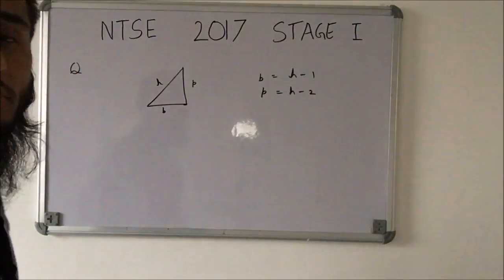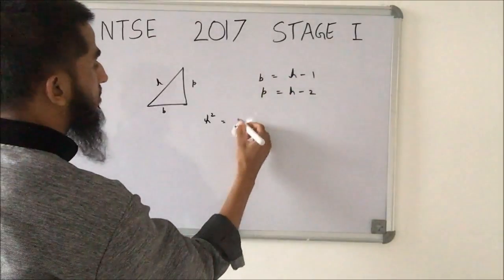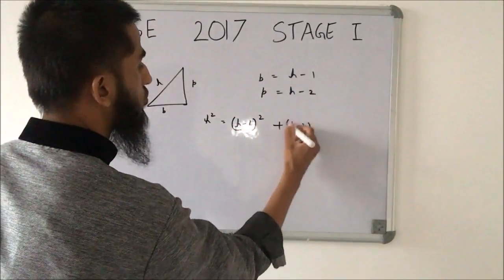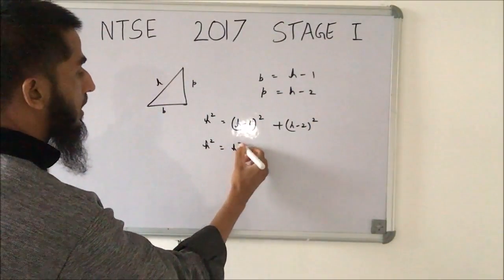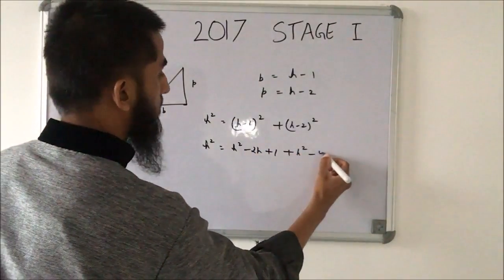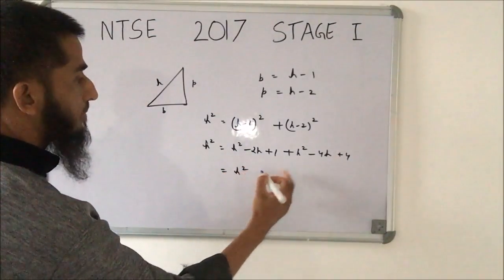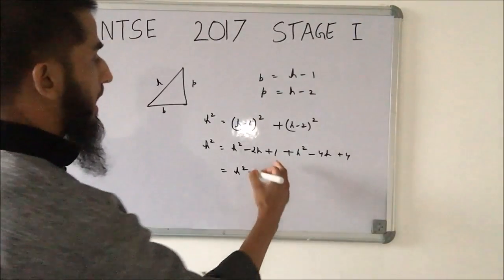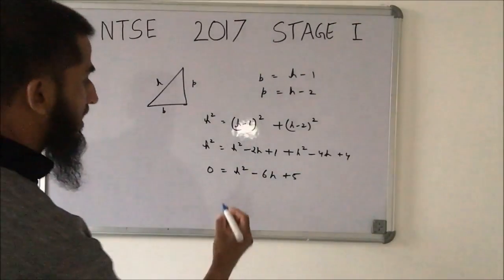Now if I apply Pythagoras theorem, h² equals the sum of the squares of these two: (h−1)² + (h−2)². Simplifying, h² = h² − 2h + 1 + h² − 4h + 4. Further simplifying gives h² − 6h + 5 = 0.